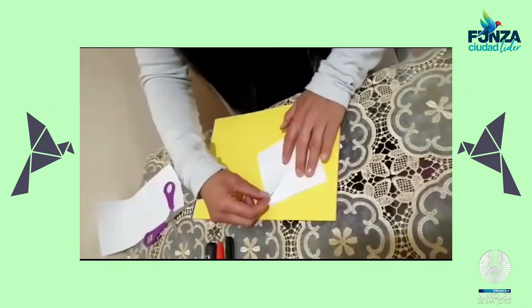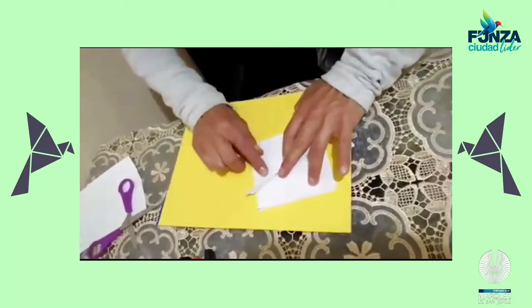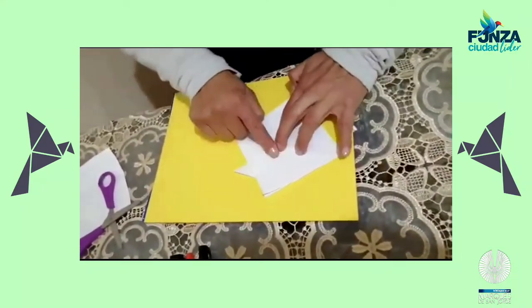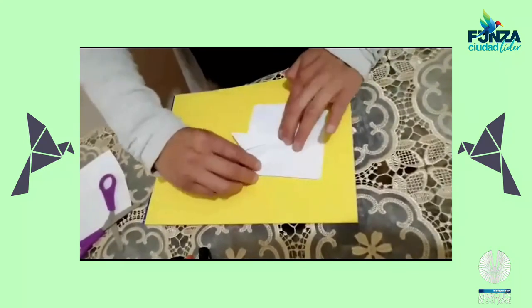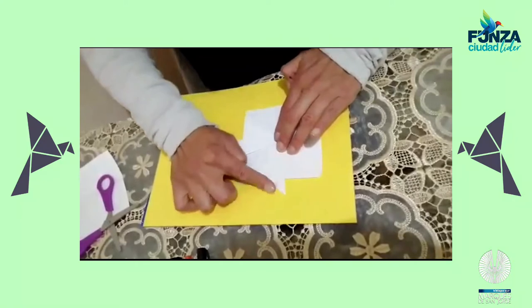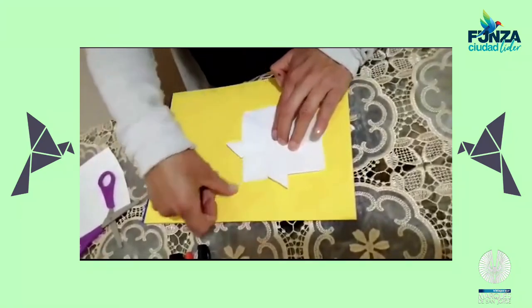Después vamos a coger, vamos a apoyar con este dedo y vamos a sacar una pestañita acá, que van a ser las cejas de Angry Birds. Igualmente al otro lado. Igual, seguimos repasando todos los filos de las hojas.